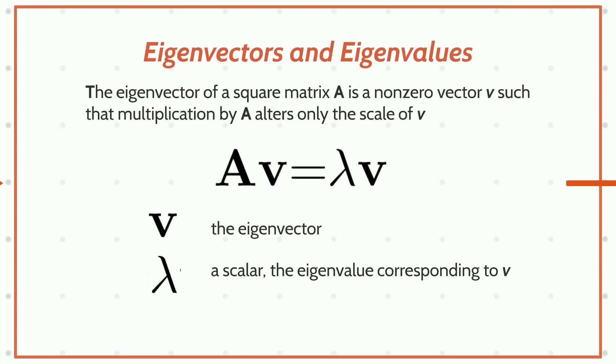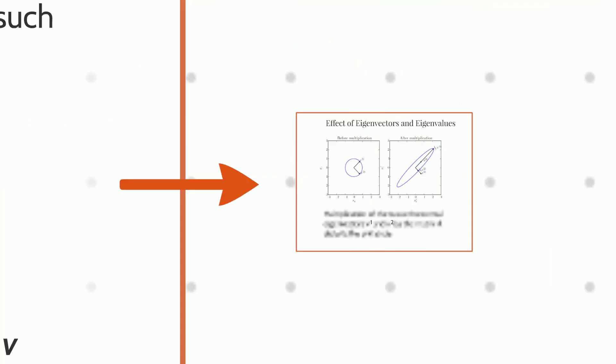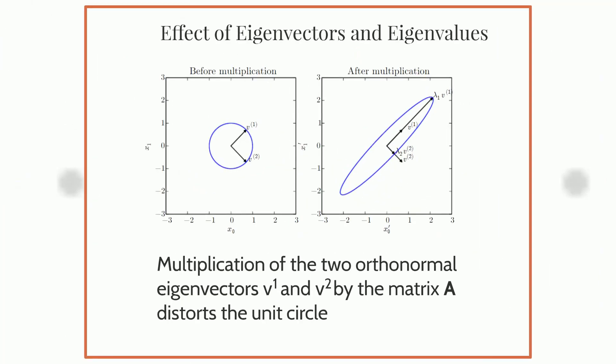Here is a visual representation of that same process. We have two orthonormal eigenvectors, v1 and v2, for the matrix A. When we multiply these vectors, and this complete unit circle — normalized to a magnitude of 1 — by the matrix A, we expand one eigenvector and shrink the other. You can see v1 grows and v2 shrinks. They expand or shrink by lambda 1 and lambda 2 respectively, which are the eigenvalues corresponding to those particular eigenvectors. This is a great way to intuitively understand these concepts through a visual representation of what's happening mathematically.